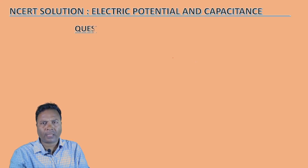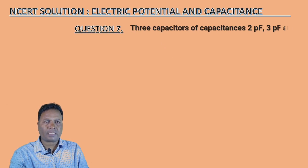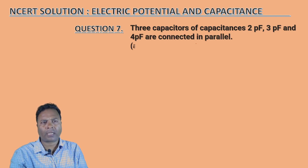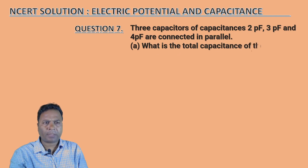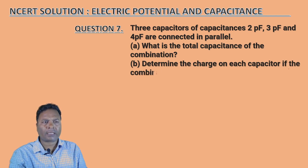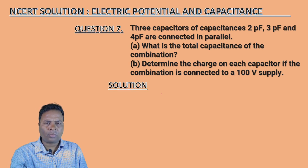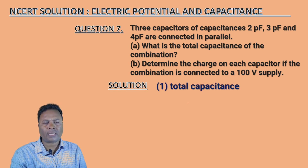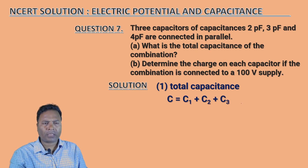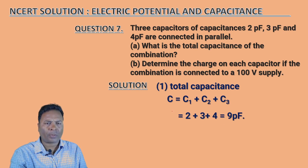Namaskar. Question number 7: Three capacitors with capacitances 2 picofarad, 3 picofarad, and 4 picofarad are connected in parallel. What is the total capacitance of the combination? The equivalent capacitance is C1 plus C2 plus C3, which gives 2 + 3 + 4 = 9 picofarad.